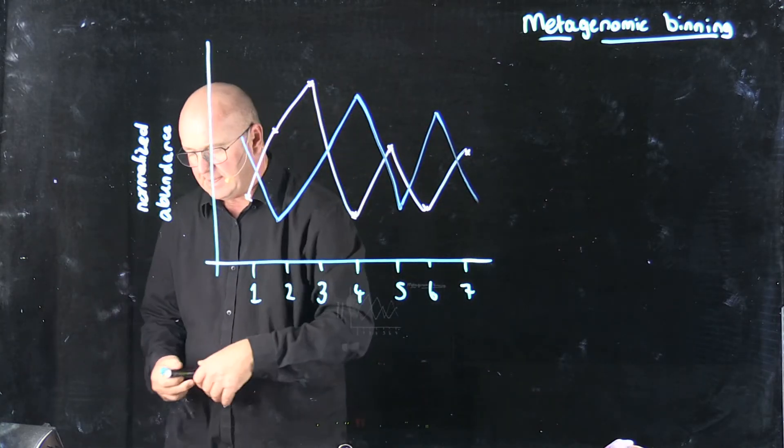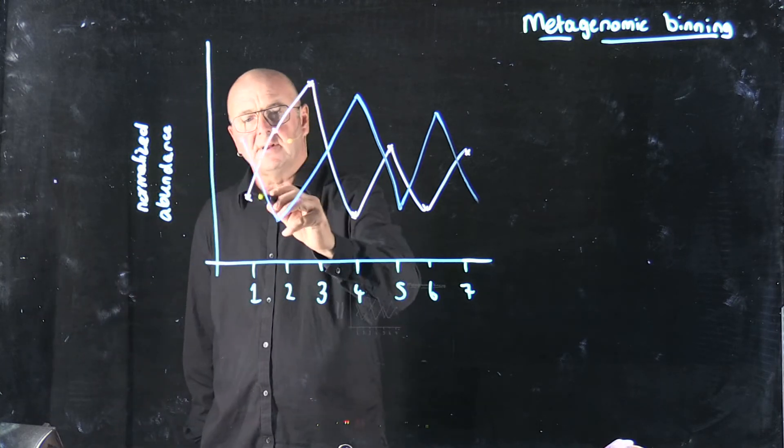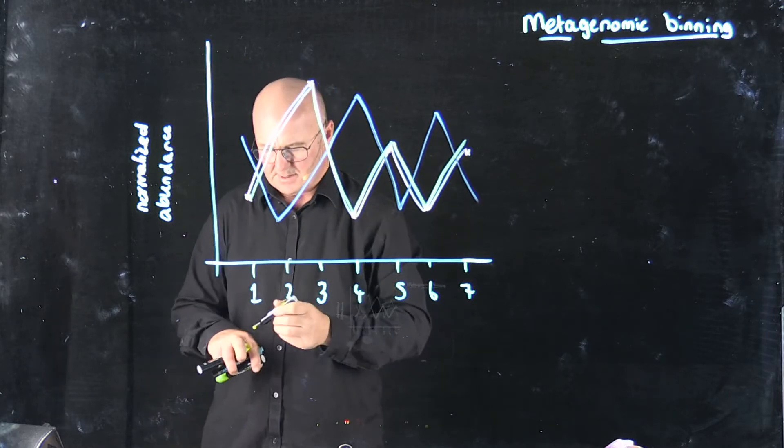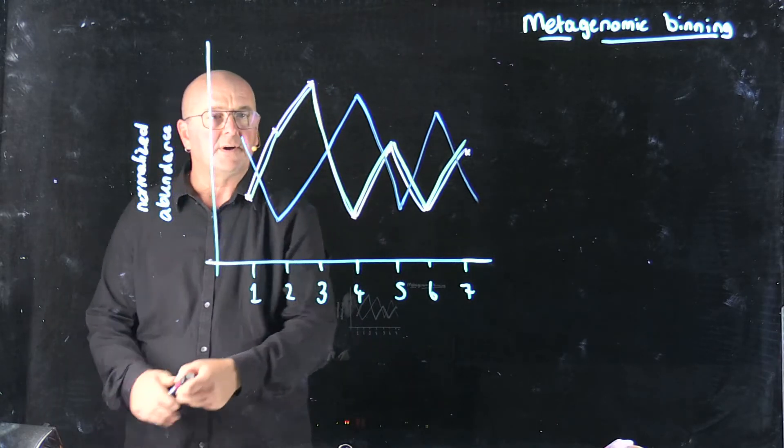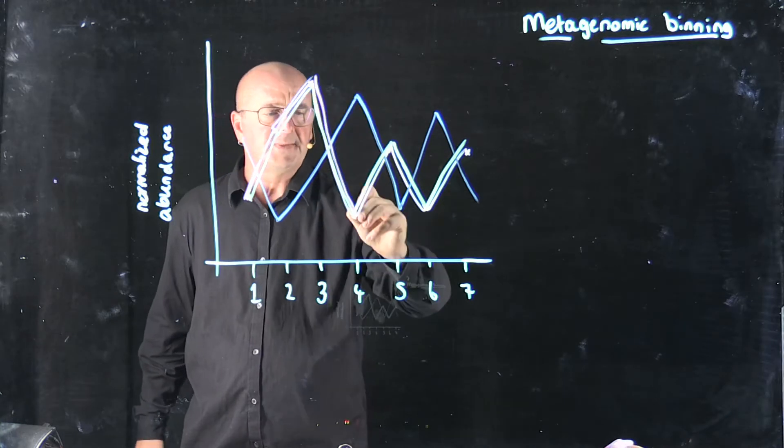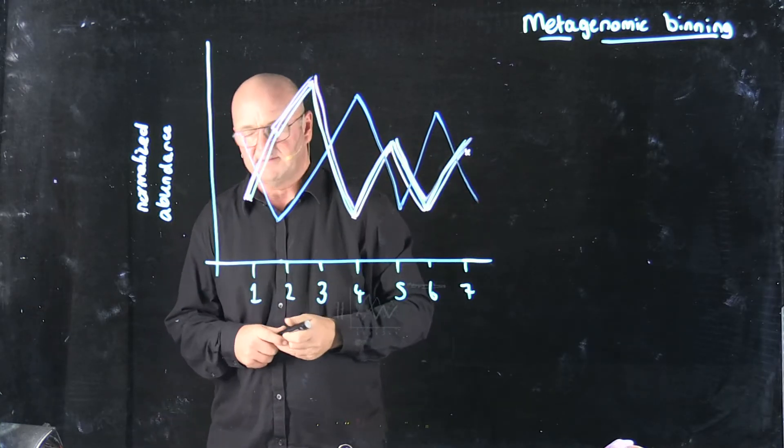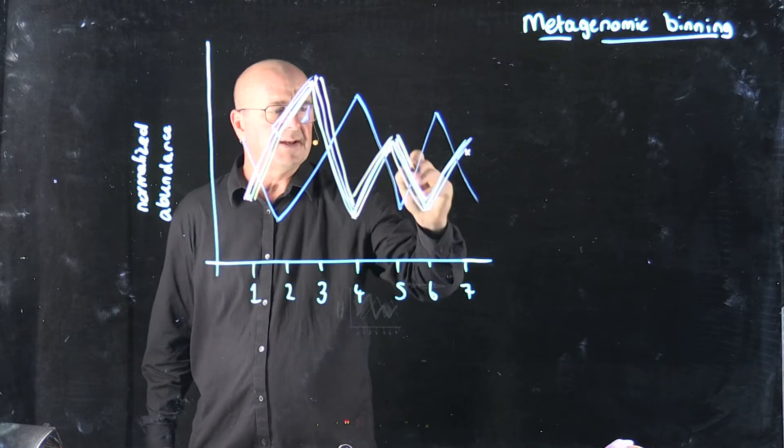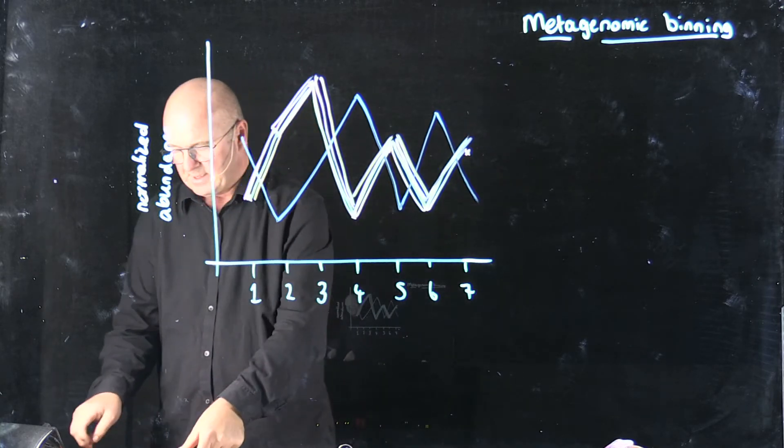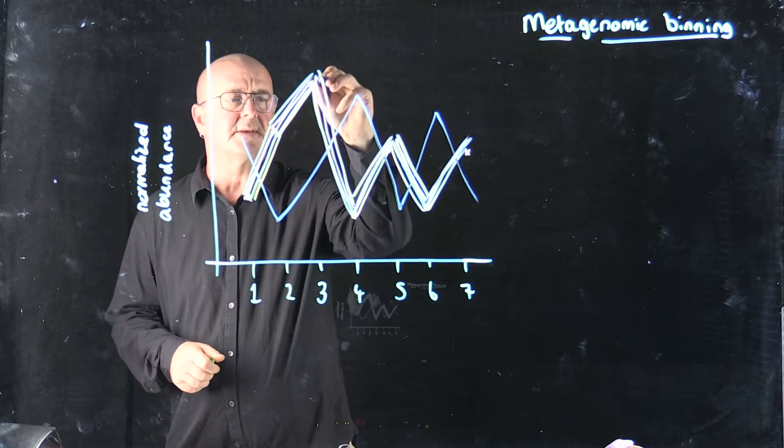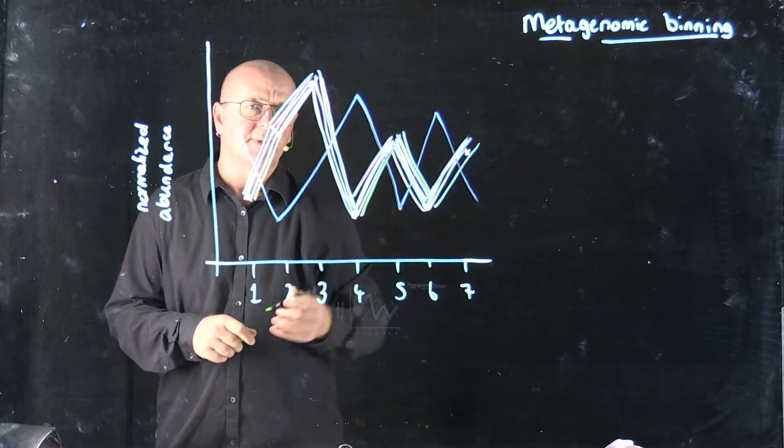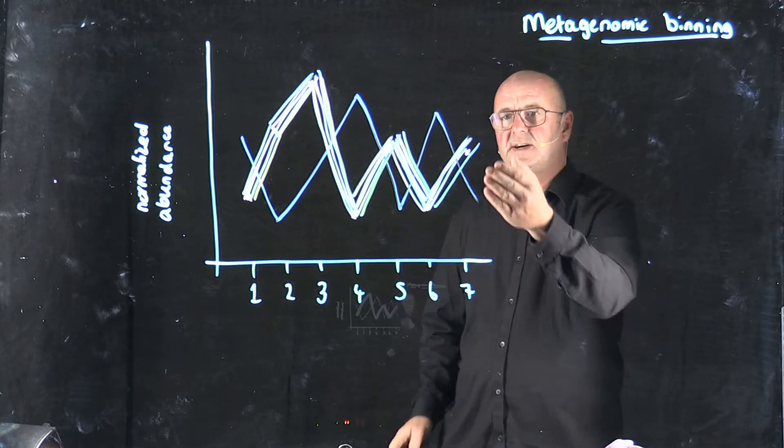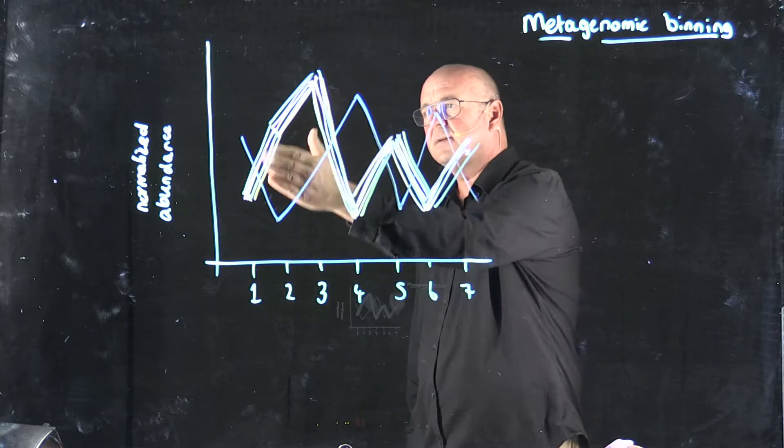But we keep going, and we plot the next contig, and we find that it behaves somewhat similar to the first one that we plotted. And then we plot the next contig, and we find it too looks quite similar. And we keep plotting contigs with similar trends. If we plot the abundance of all of our contigs, what we'll find is there are groups of contigs that behave the same way.